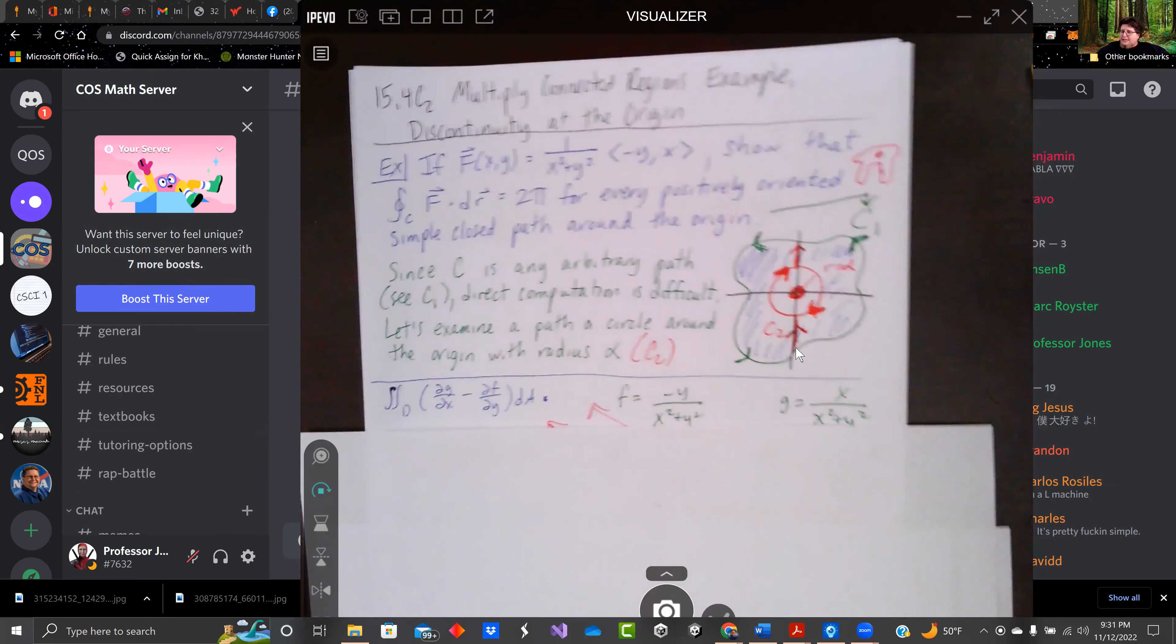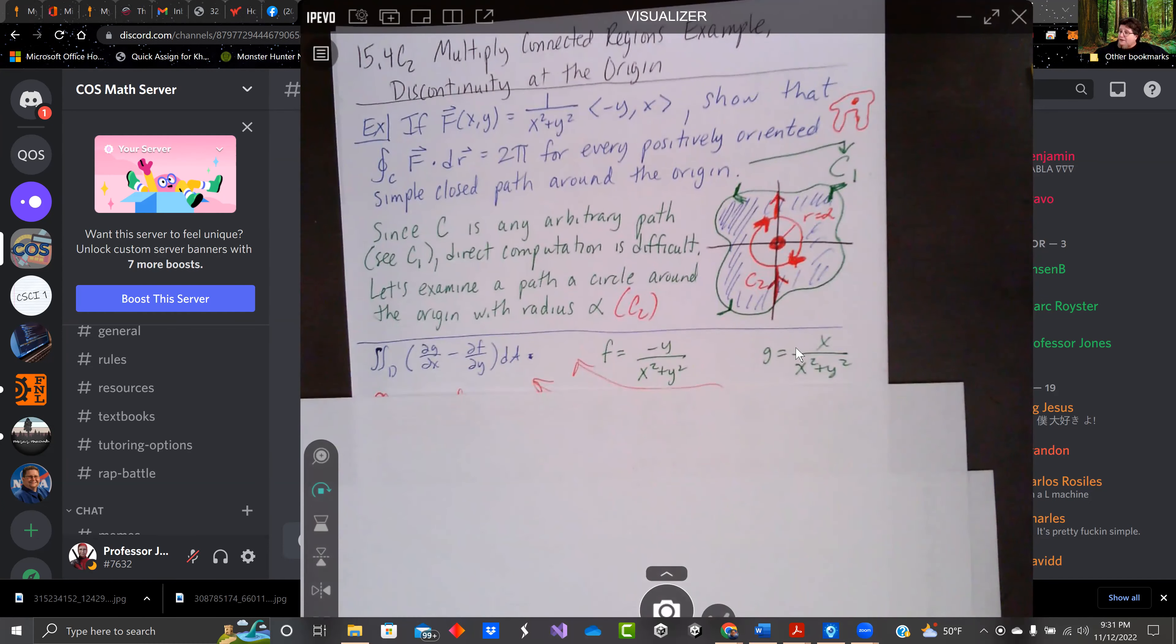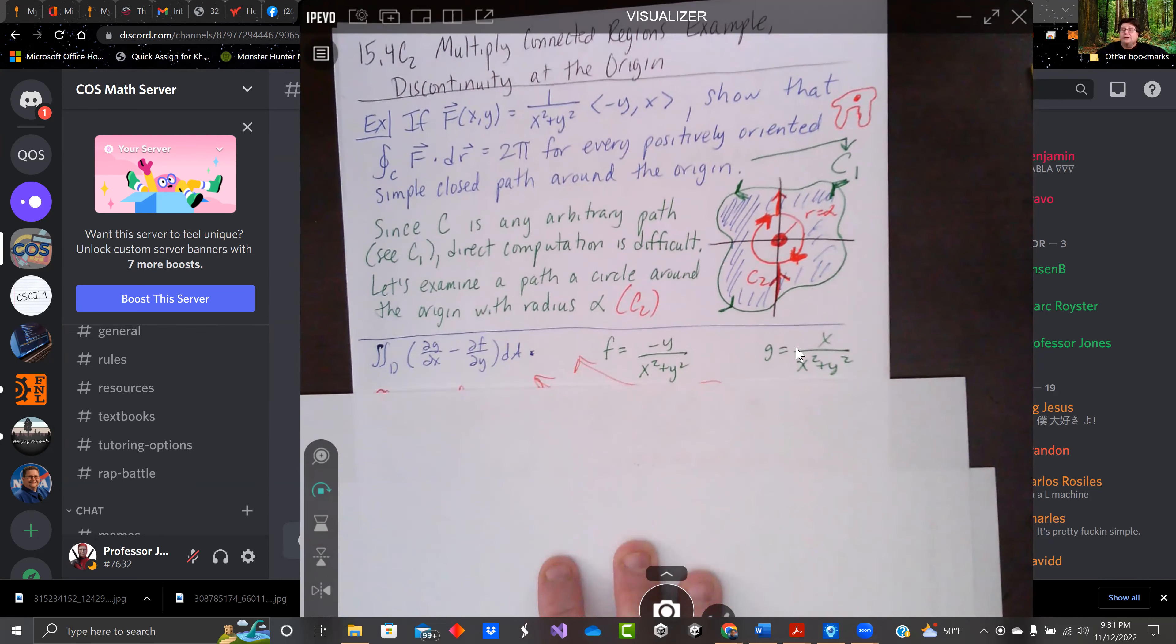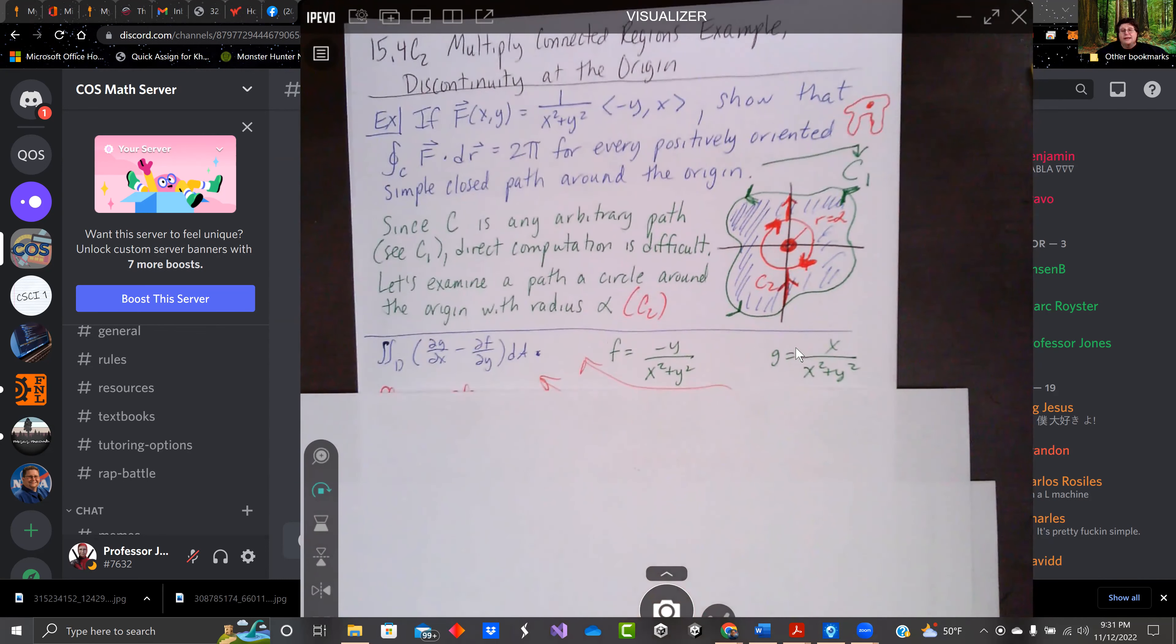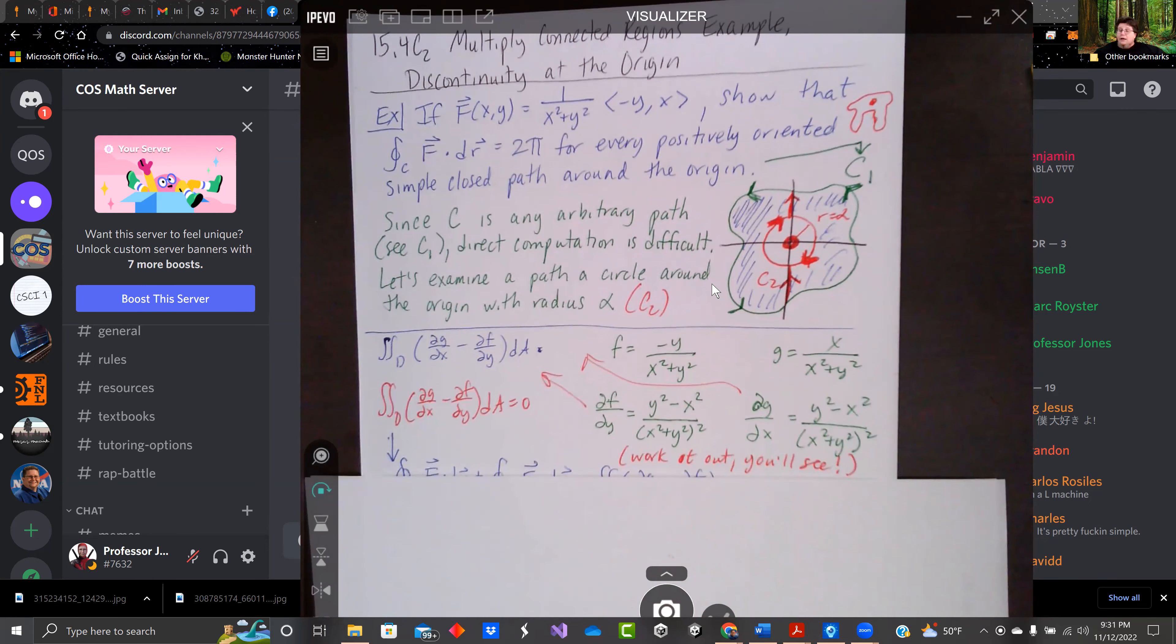Let's see what that does here. We've got dg/dx minus df/dy going around the thing. When we distribute the 1 over x squared plus y squared to our two pieces of the vector, f is negative y over that x squared plus y squared. And g is x over that x squared plus y squared. You're going to see when you work it out that both df/dy and dg/dx both equal y squared minus x squared on top, and then x squared plus y squared, that quantity squared on bottom.